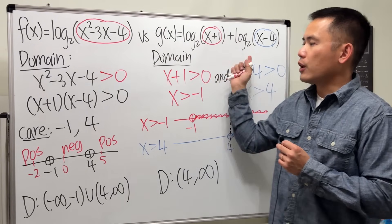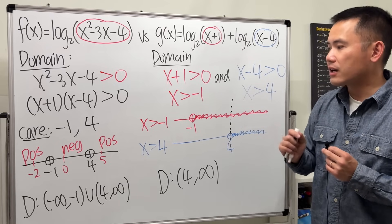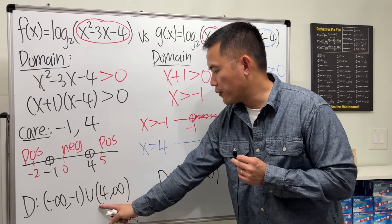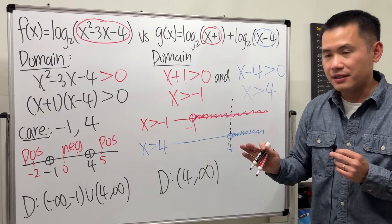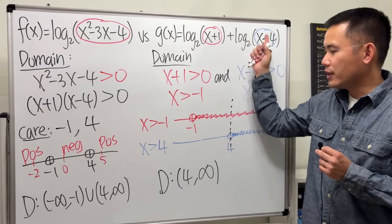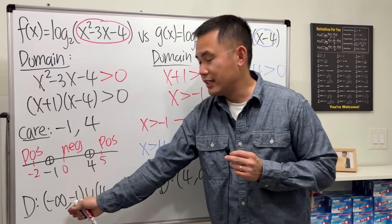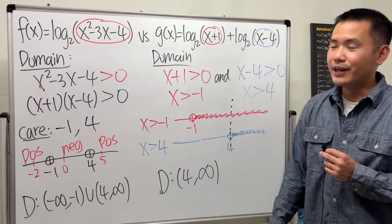Well, these two functions, they are equal on their common domain, which is from 4 to infinity. But in terms of the whole functions, they are not the same, because for this function we do not have this portion of the graph. All right, you